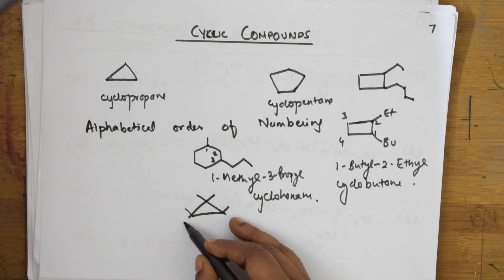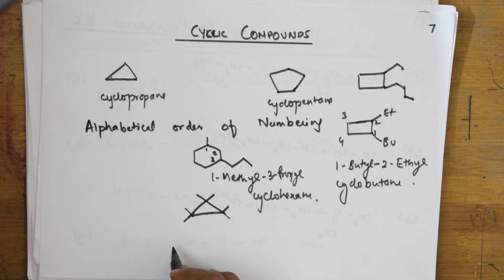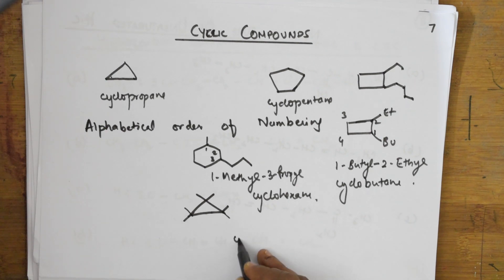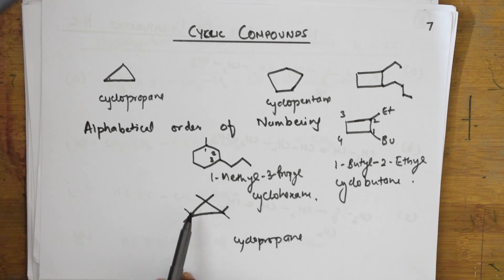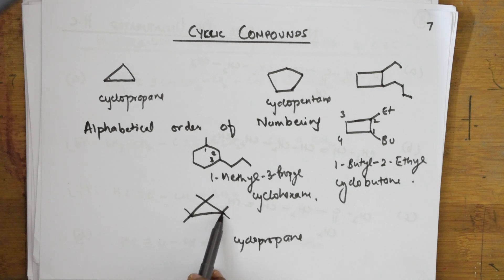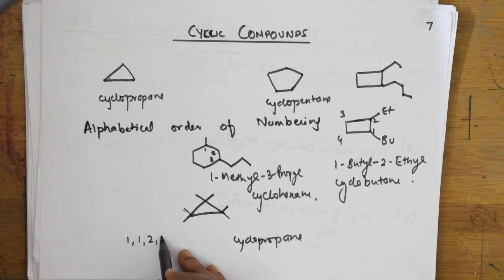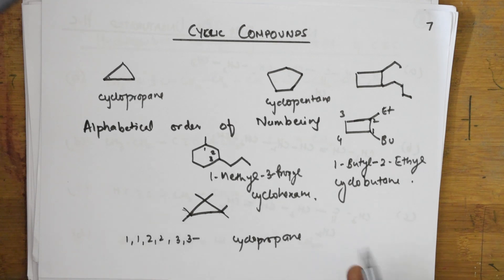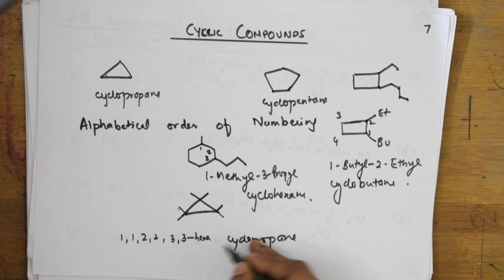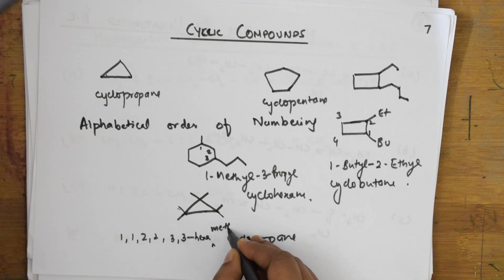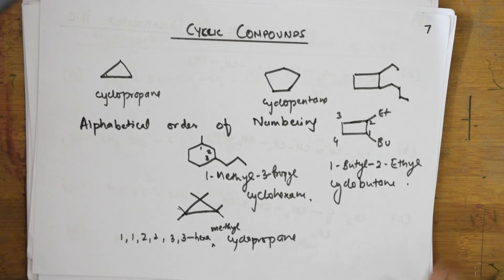Now let's name this compound. The parent ring is cyclopropane. At the first position there are two substituents, at the second position two, and at the third position two — making six methyl groups total. Since each substituent is one carbon, the name is 1,1,2,2,3,3-hexamethylcyclopropane.